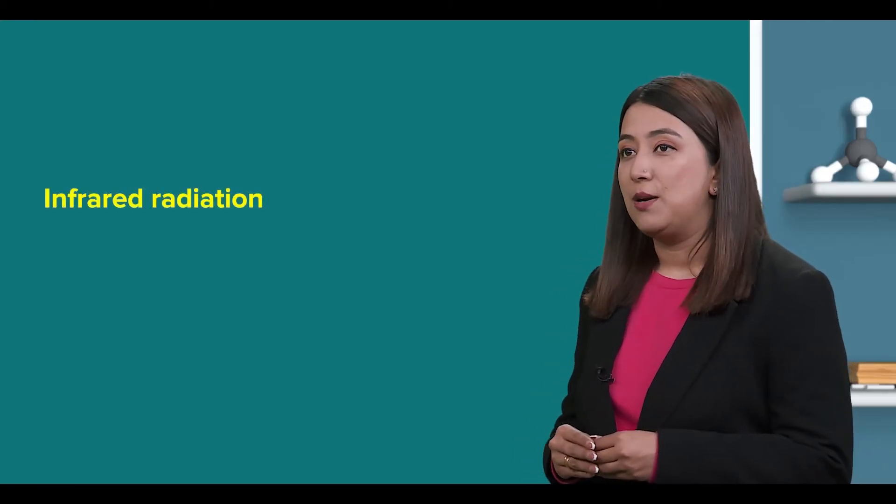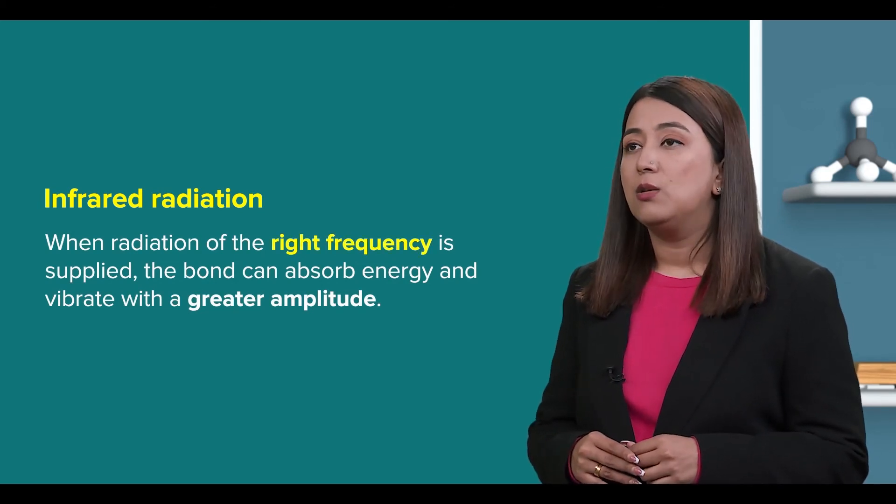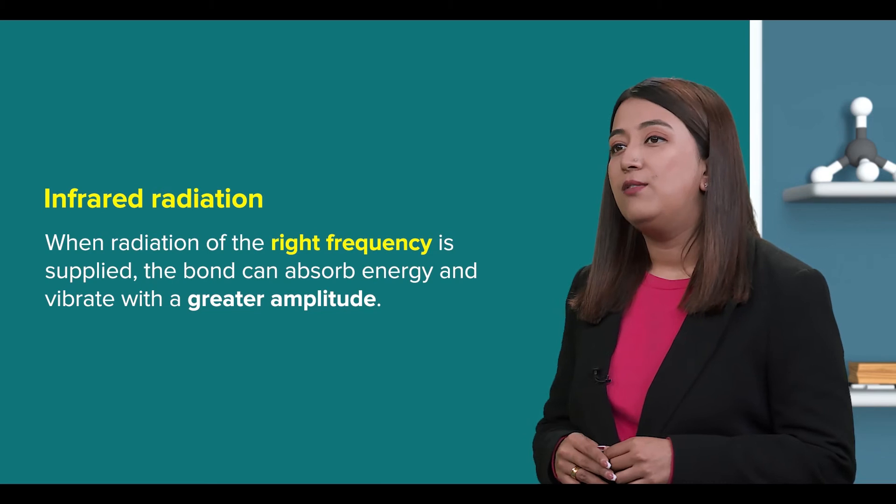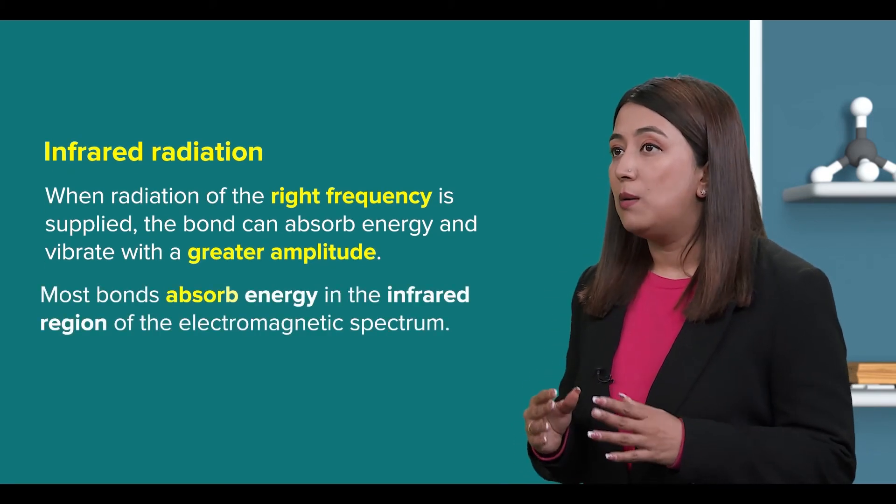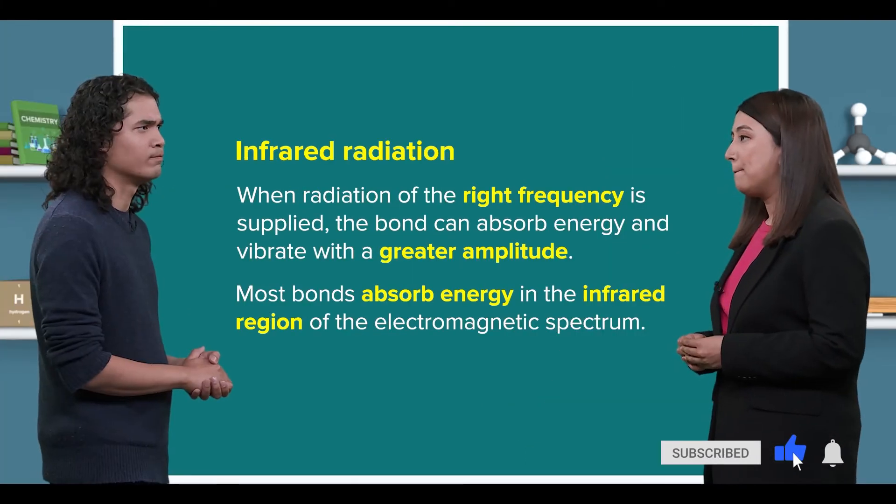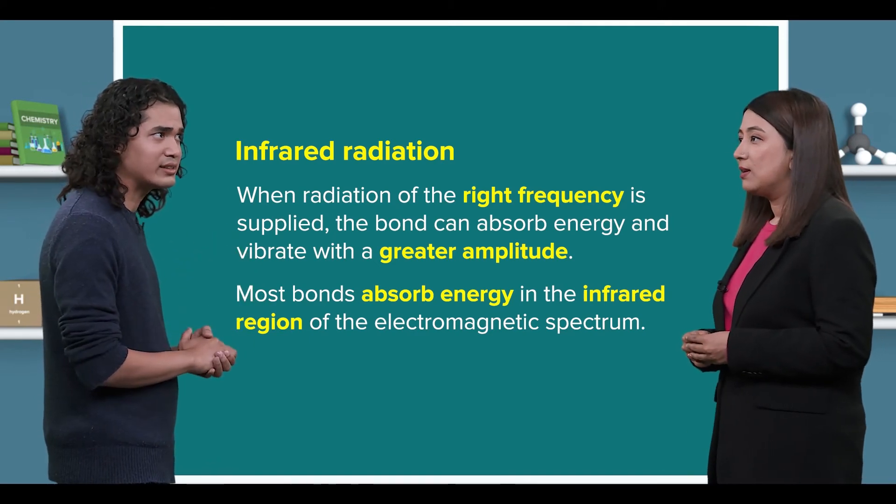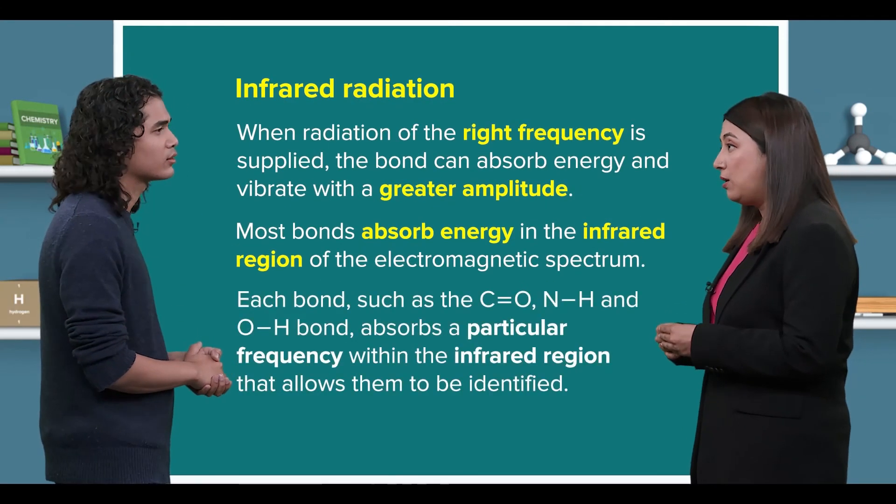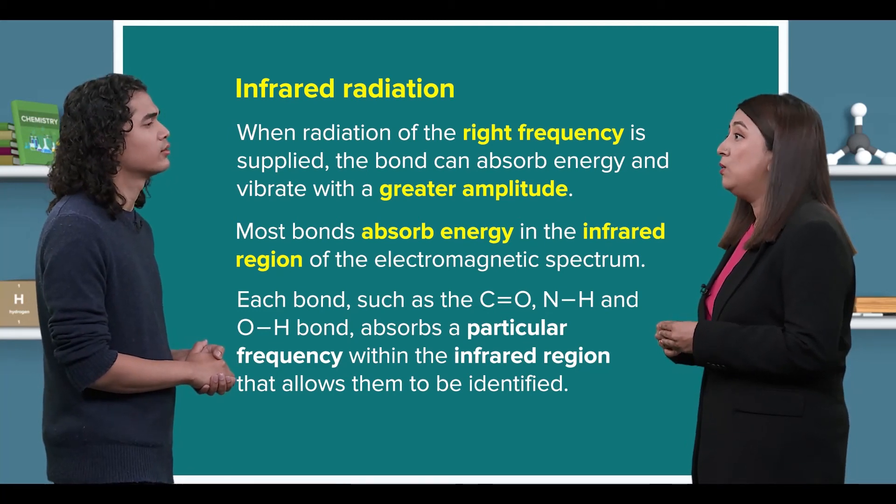Now back to our topic. Infrared radiation - when radiation of the right frequency is supplied, the bond can absorb energy and vibrate with a greater amplitude. Most bonds absorb energy in the infrared region of the electromagnetic spectrum. Hmm, that's why we specifically use infrared frequencies. Exactly. And each bond, such as the C=O double bond as well as the NH and OH bonds, absorbs a particular frequency within the infrared region that allows them to be identified.